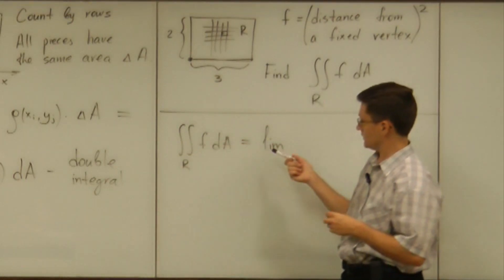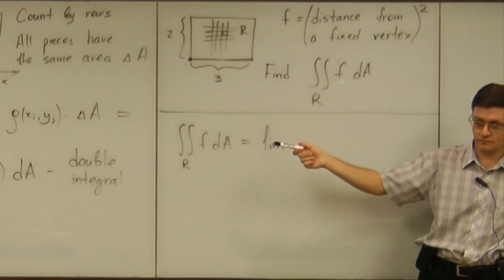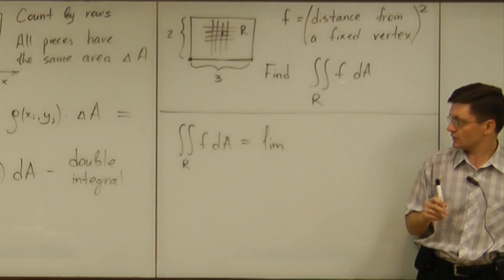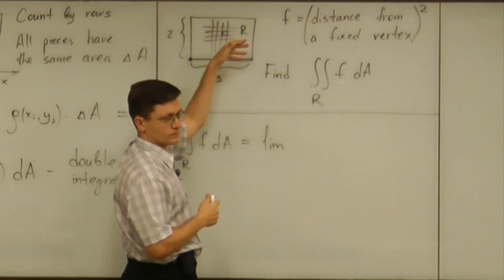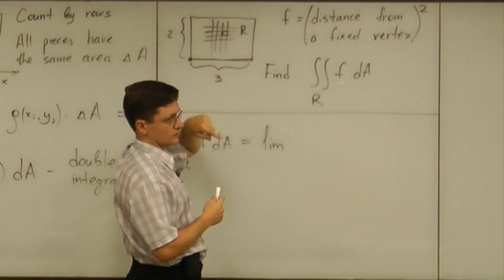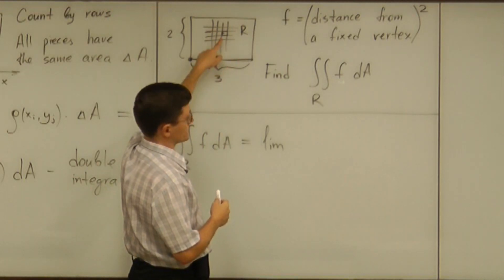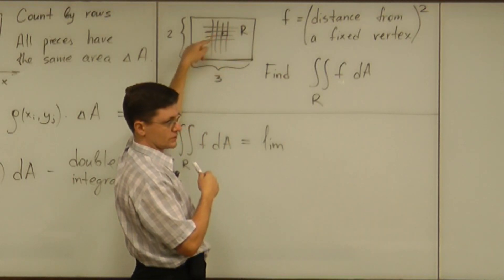But in order to write down the limit, you already need some notations. You have to subdivide the region, whatever the region is, into small pieces. And you have to arrange those pieces. And to arrange those pieces, you need coordinate system.